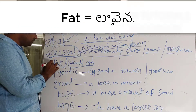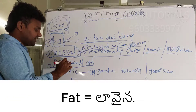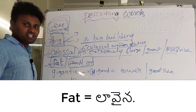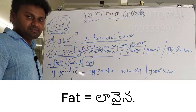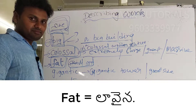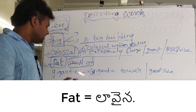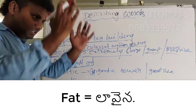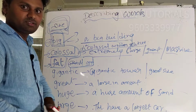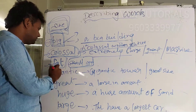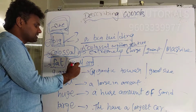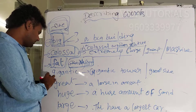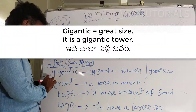Next is 'fat,' which means the opposite of skinny — very large in body size. And 'skinny' is the opposite of fat. So these two are opposites used to describe body size.